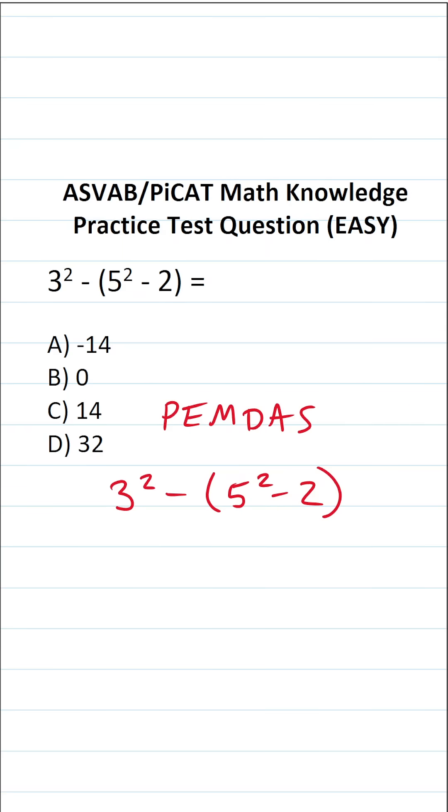The order of operations says you do what's in parentheses first, exponents next, multiplication and division as they appear in the expression from left to right, that is to say they're treated as equals, and then addition and subtraction as they appear in the expression from left to right, that is to say they're treated as equals.